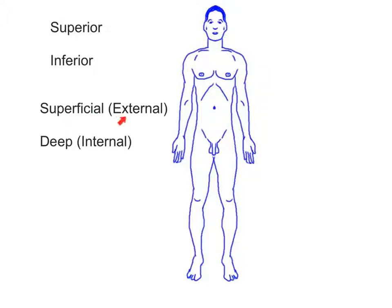Superficial, or external, describes a structure located on or toward the body's surface. The skin is superficial to the bones of the skeleton. Deep, or internal, describes a structure located away from the body's surface. The muscles are deep to the skin.